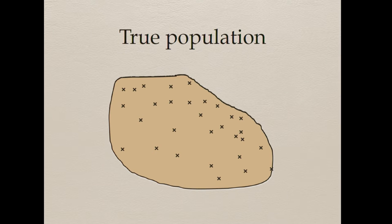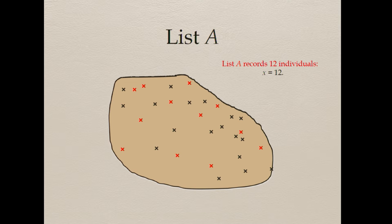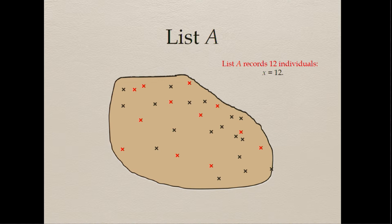This is our homeless population: there are 30 crosses — 30 individuals. List A observed the red individuals — there were 12. So they missed 18. We only know that they saw 12, so all we have is a lower bound: there must be at least 12. That gives us some information, but it's very weak. So we need to collect more data. We repeat the exercise — list B goes out and counts all the homeless individuals they see. They record 20 individuals — the blue ones. But they missed 10 black ones, though we don't know that. All we know is they've seen 20.